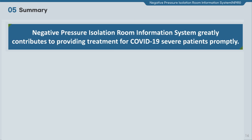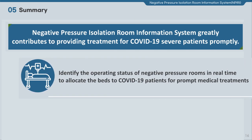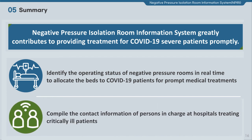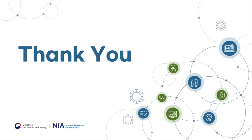Lastly, some highlights of today's lecture: the Negative Pressure Isolation Room Information System allows real-time identification of the operating status of negative pressure rooms in medical institutions treating patients in critical condition, enabling prompt bed allocation for COVID-19 patients. The health authorities established contact information of persons in charge to precisely identify status and for successful system operation, constantly communicating to upgrade the system. Likewise, the information system greatly contributes to preemptively preventing the spread of COVID-19. This is the end of my lecture. Thank you for listening.